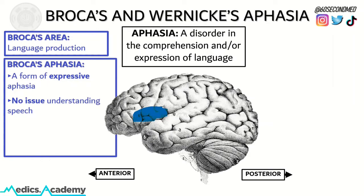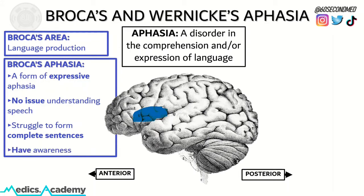In Broca's aphasia, there's no issue understanding speech, but when it comes to expressing speech, there's a struggle to form complete sentences. Classically, the patient will form abrupt one or two word sentences for what they want to say. The patients tend to have an awareness that they have this language difficulty, and so it can be frustrating for them to try and express what they want to say.